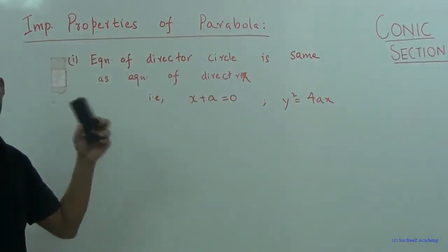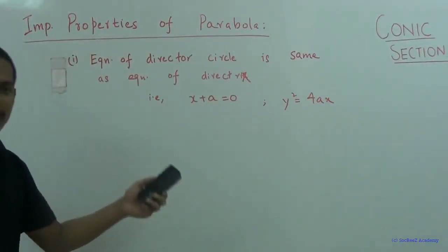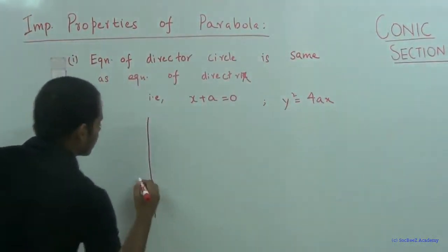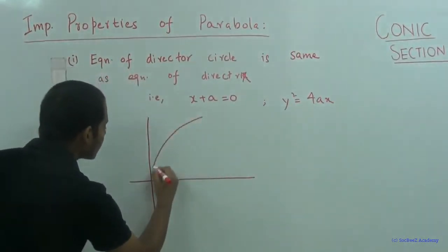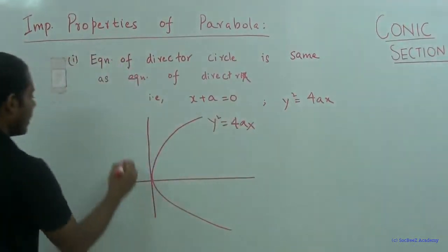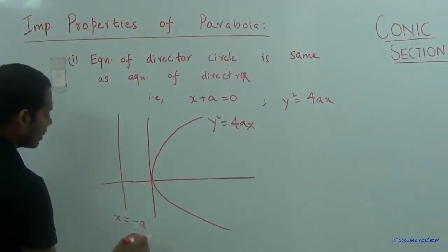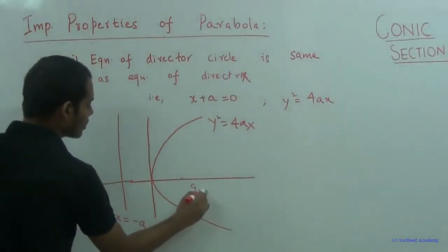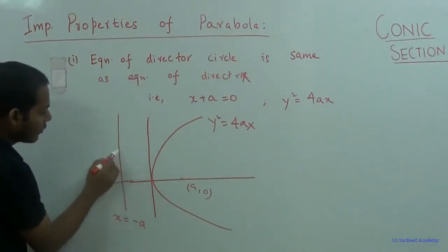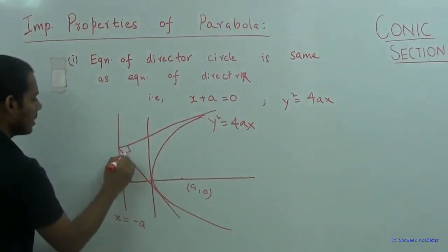This also means that the point of intersection of the pair of tangents drawn from any point on the directrix makes an angle of 90 degrees with each other. So this is our parabola y squared equal to 4ax, this is our directrix x equal to minus a, and this is our focus at (a, 0). If we choose any point on the directrix and draw a pair of tangents, this angle is 90 degrees.